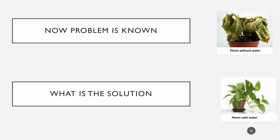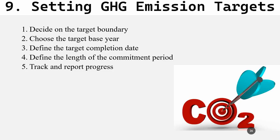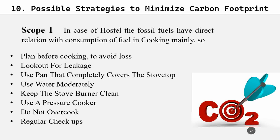The problem is now known — carbon footprint is there. So what is the solution? In order to address this, we need to set a GHG emission target. It's important to first decide the target boundary. For example, choosing scope two — electricity consumption — after analyzing data over two to three years, you see how much CO2 is being produced on average, then work to reduce it in further years using other technologies. That's why setting a target is important to minimize the carbon footprint.